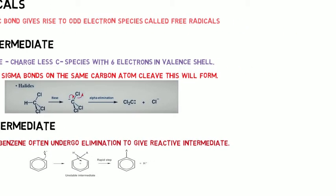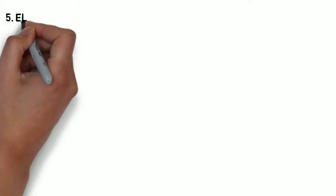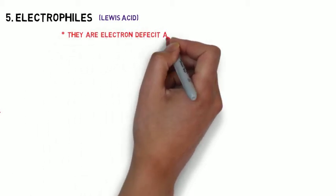You can see that. The fifth one is electrophiles. The electrophile is otherwise known as Lewis acid. They are electron deficient and they accept electron pairs from other atoms.